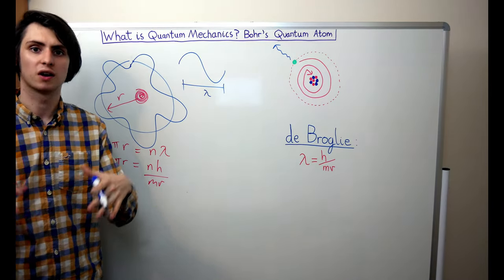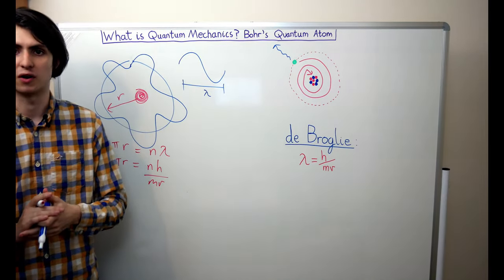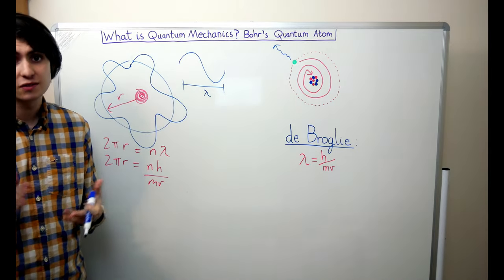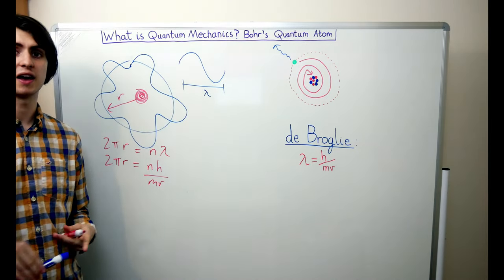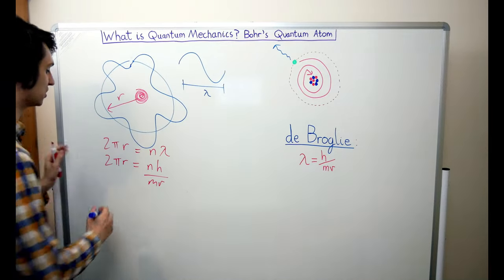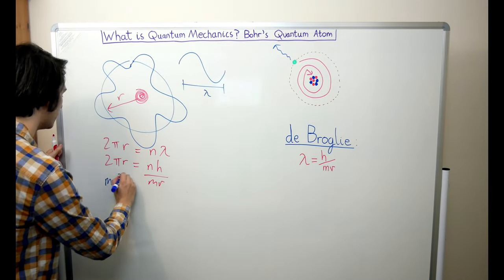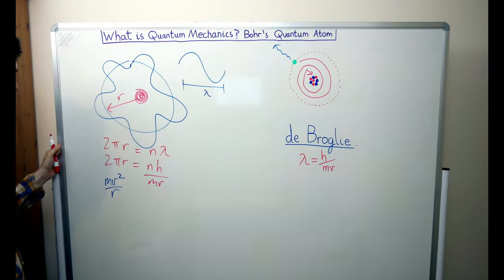Okay, so now let's put our classical mechanics hats back on. In classical mechanics, if something is in a circular orbit, then we must have a centripetal force, which is given by mv² divided by r.